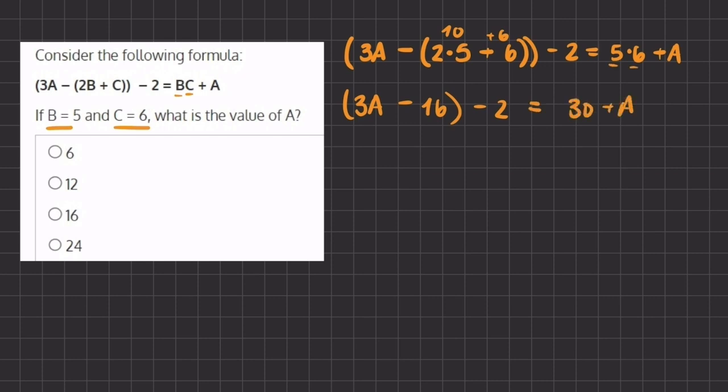Now we can get rid of these parentheses because they are no longer relevant and we can further simplify this part of the equation. So now we have 3a minus 18 because negative 16 minus 2 gives us a negative 18 equals 30 plus a.